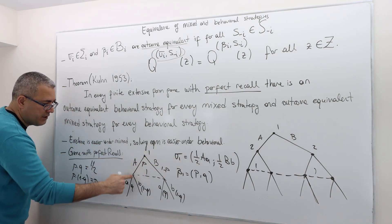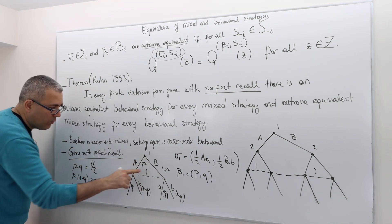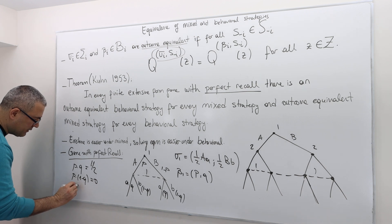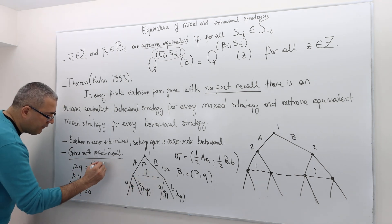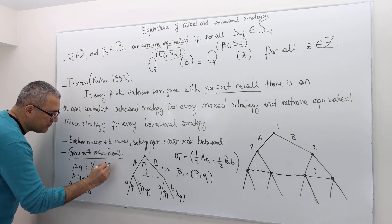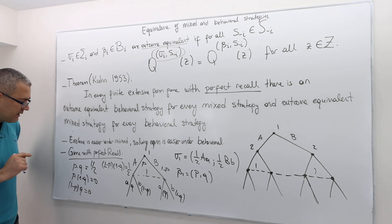And then, I'm sorry, 1 minus P times Q, also zero. And then finally, 1 minus P times 1 minus Q must be one half. Can I find such P, Q values? Well, I can't. Why?